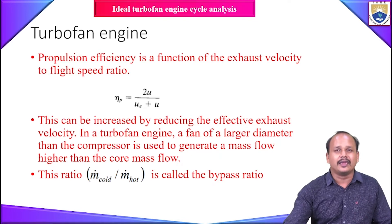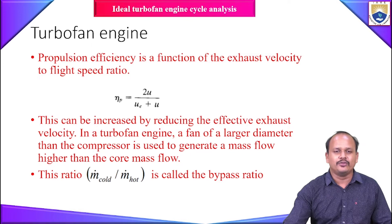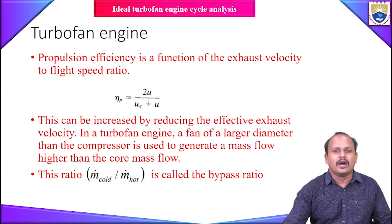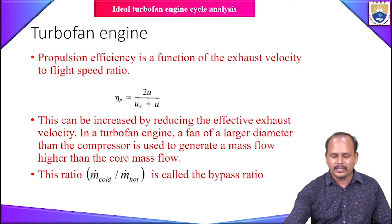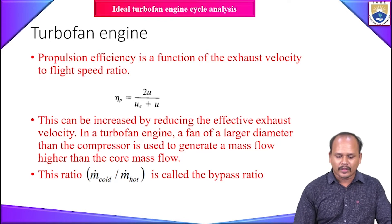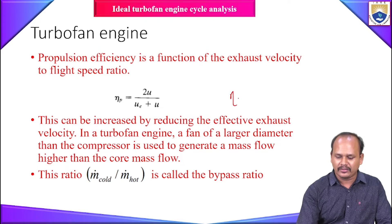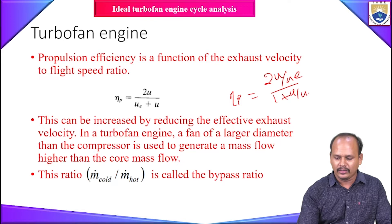Before starting our cycle analysis, let us see the reason why the turbofan is used in most commercial aircraft and how it differs from the turbojet engine. From the definition of propulsive efficiency, we have the simplified equation derived in the previous lecture: η_p is equal to 2u divided by (u_e plus u), which can also be written as 2(u/u_e) divided by (1 + u/u_e).